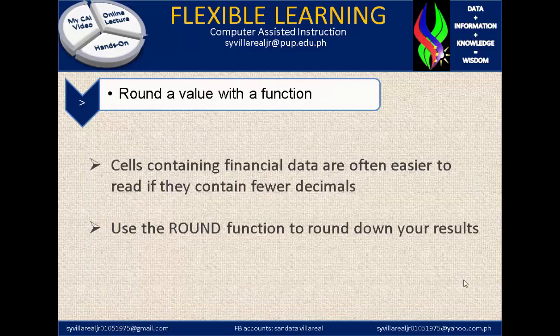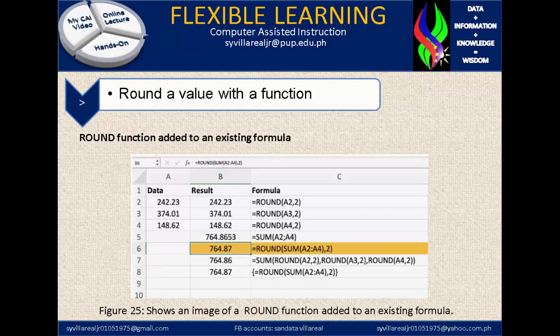Round the value with a function. Cells containing financial data are often easier to read if they contain fewer decimals. That's why in computer science we typically need at least three decimal points. Use the round function to round down your result. It is found under the formula tab. In figure 25, it shows an image of a round function added to an existing formula, such as round of sum of A2 to A4, specifically to two decimal places. That is how it works.